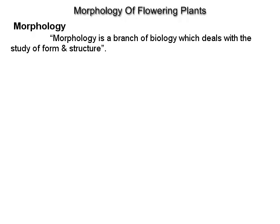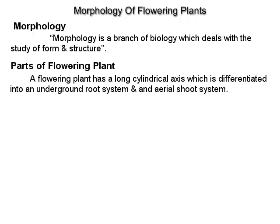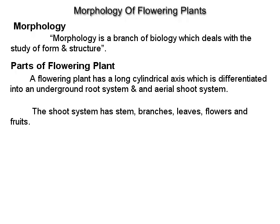Morphology of flowering plants. Morphology is a branch of biology which deals with the study of form and structure. A flowering plant has a long cylindrical axis which is differentiated into an underground root system and an aerial shoot system. The shoot system has stem, branches, leaves, flowers and fruits.